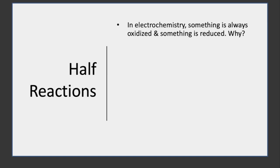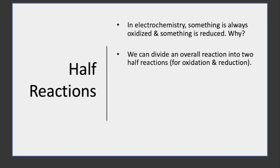So let's see how it's done. When we're doing a redox reaction, we always talk about redox, which is reduction and oxidation. Some things are always oxidized and some things are always reduced. Why does that happen? Well, the electrons have to go somewhere. So we're going to divide our overall reaction into two half-reactions — one for oxidation and one for reduction.